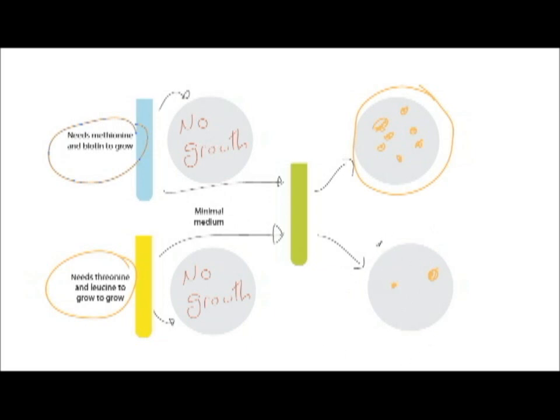The reason there are only a few colonies is because there are very few collisions on a small scale. However, as there are millions, there are quite a few collisions. But the vast majority don't collide and still can't produce methionine, biotin, threonine, or leucine.